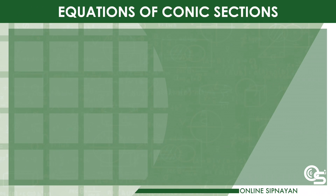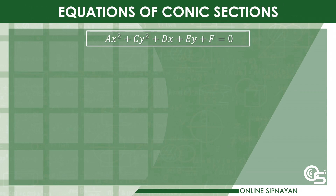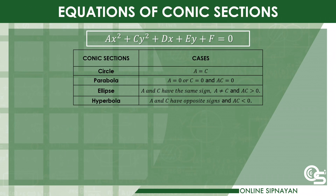Let's try some cases to easily identify the type of conic section. For a circle, a is equal to c. For a parabola, a equals zero or c equals zero, and ac equals zero. For an ellipse, a and c have the same sign, a is not equal to c, and ac is greater than zero. For a hyperbola, a and c have opposite signs, and ac is less than zero.